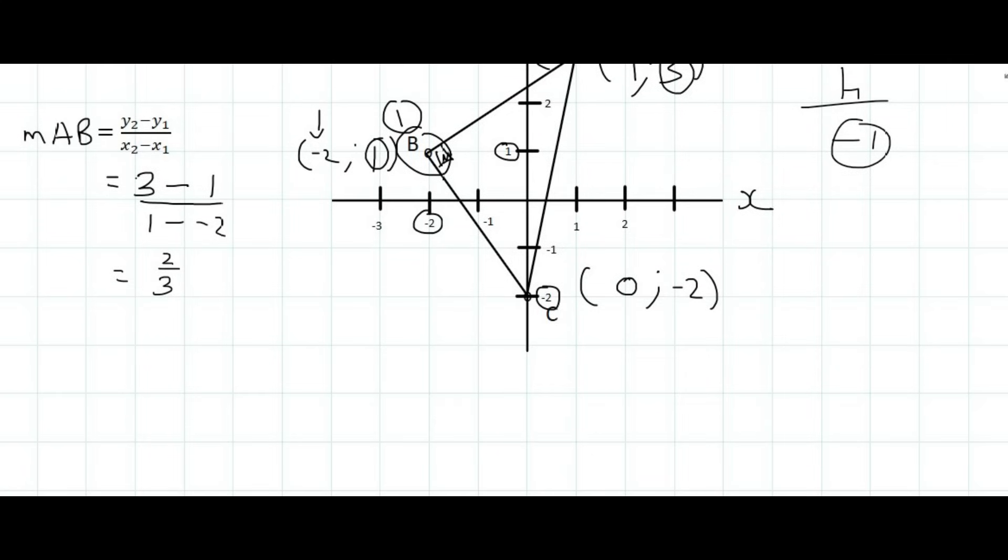We can now look at the gradient of BC, and I'm going to use B as point number 1 again, and I'm going to use C as point number 2. So the y value of point number 2 is minus 2, minus the y value of point number 1 is 1.